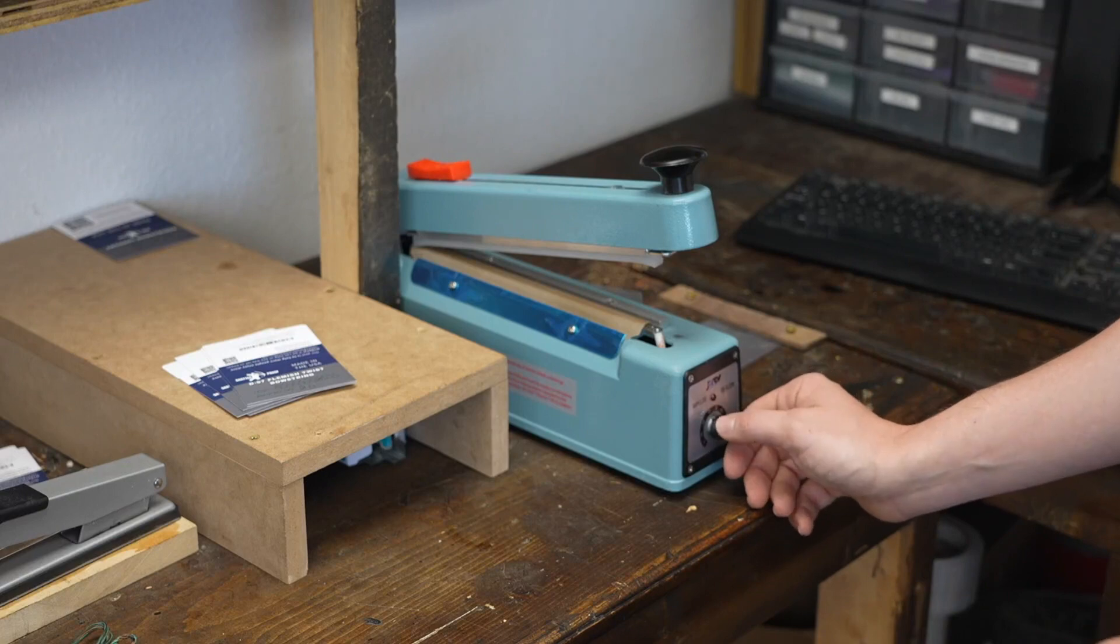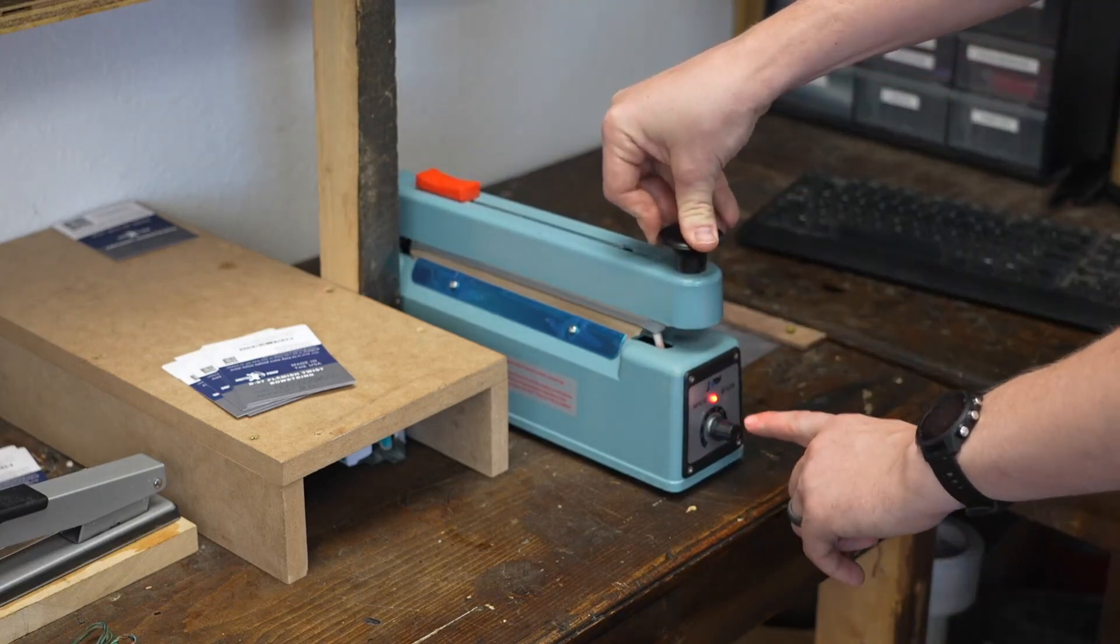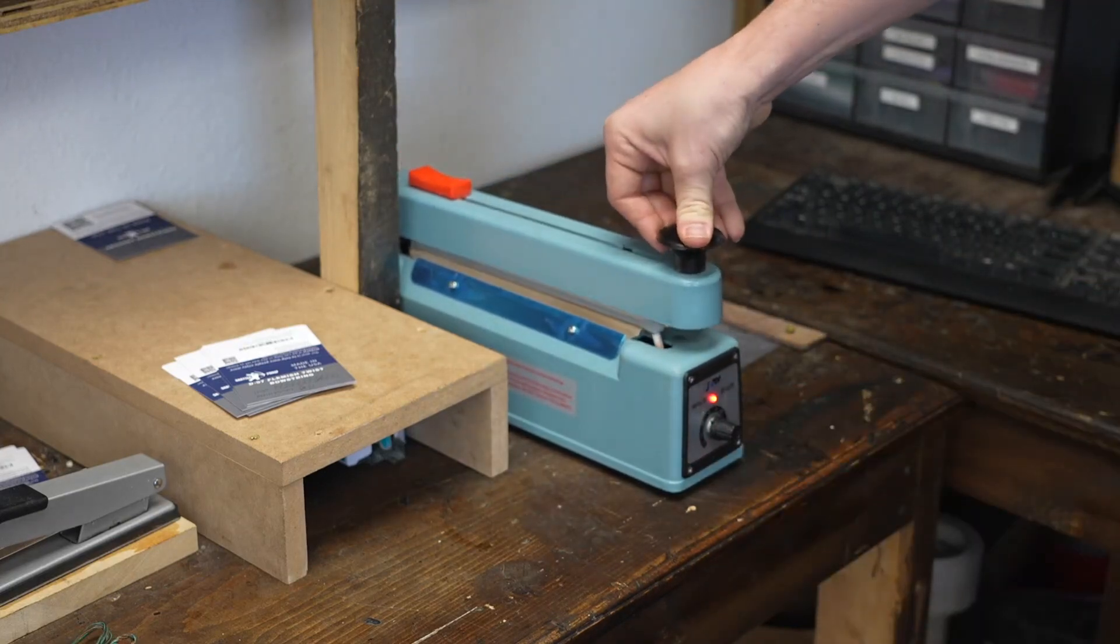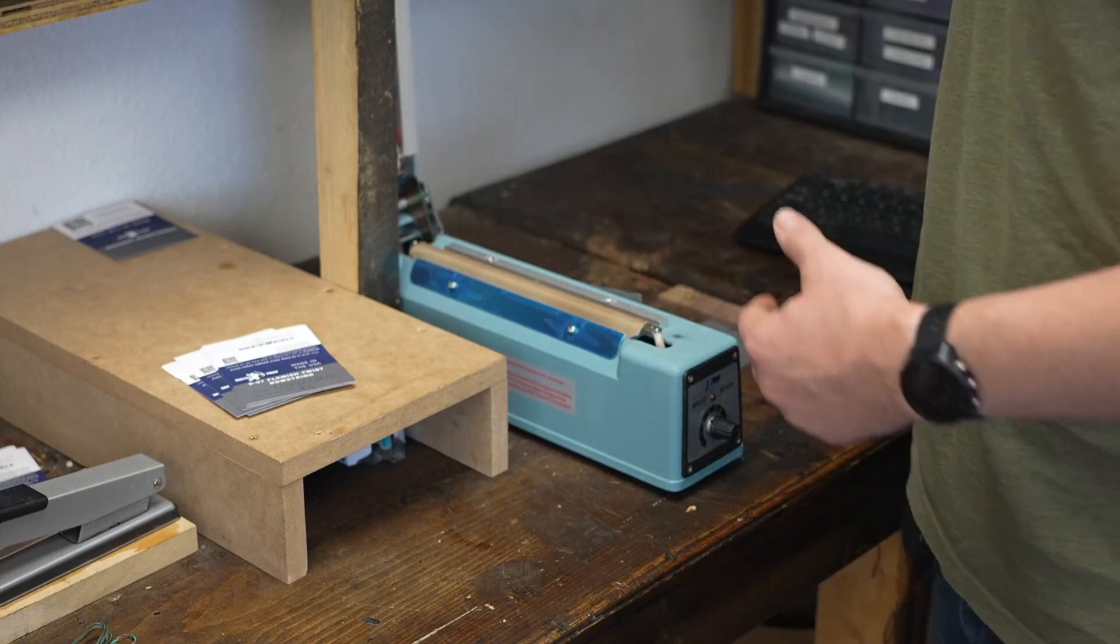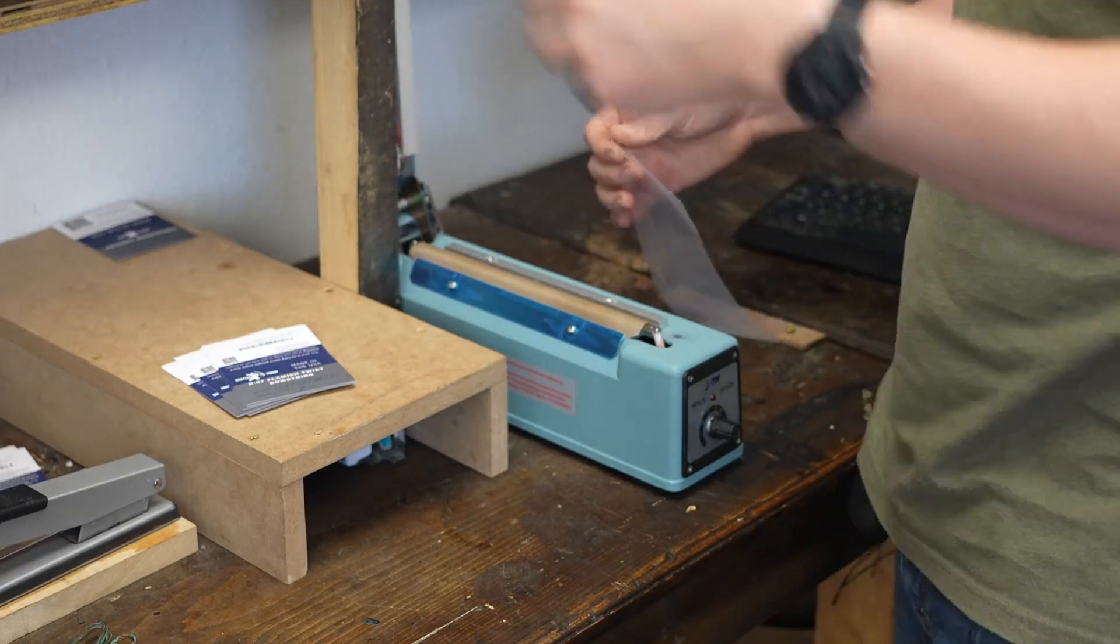The heat gauge is based on time, so if you turn the heat gauge up, the red light will turn on and it will stay on longer. It's going to be the same temperature though, and if you turn it down it will stay on less. Depending on how thick your poly bag is will depend on how hot you need it to get.